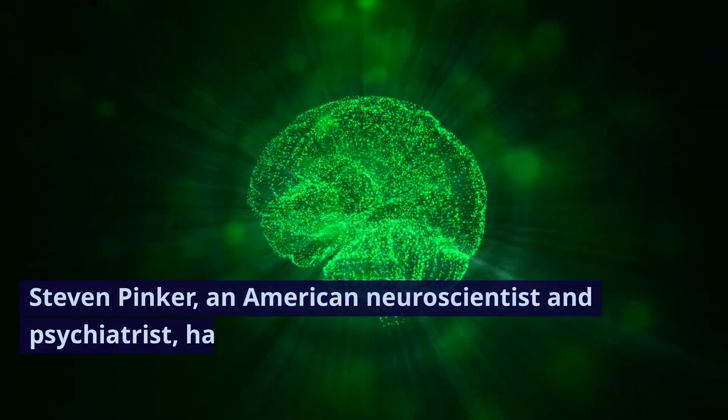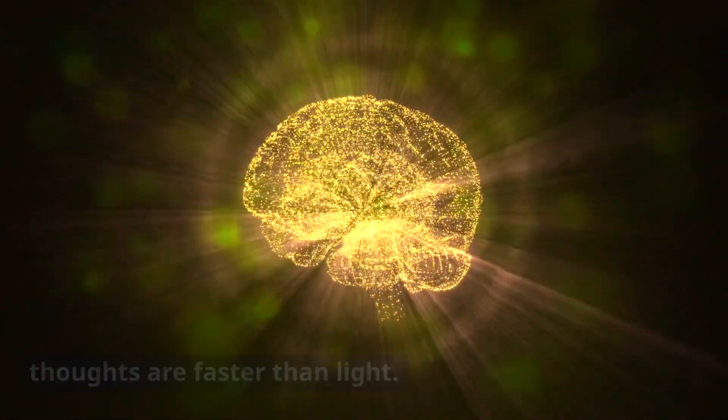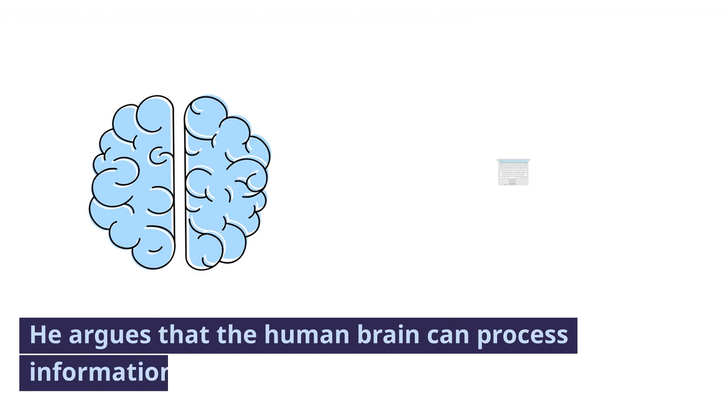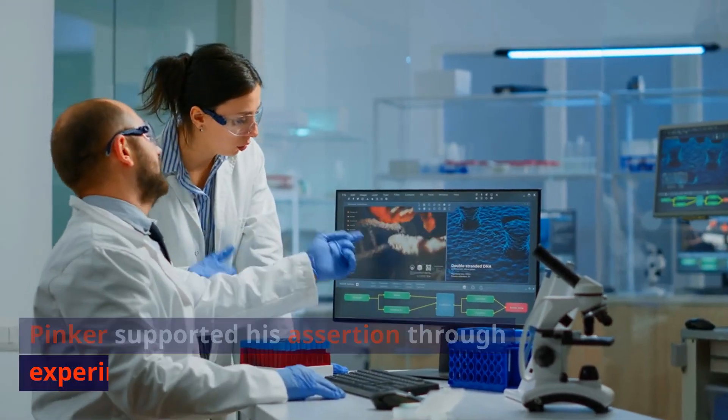Steven Pinker, an American neuroscientist and psychiatrist, has put forth the claim that thoughts are faster than light. He argues that the human brain can process information at a speed faster than light. Pinker supported his assertion through experiments.